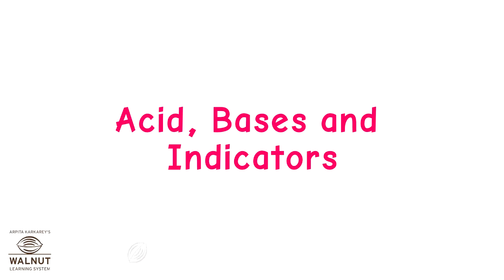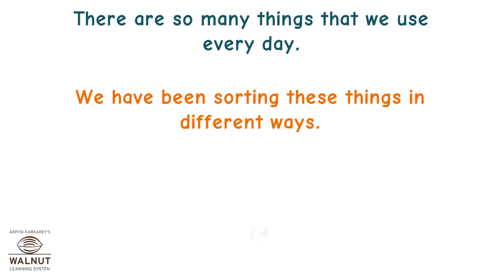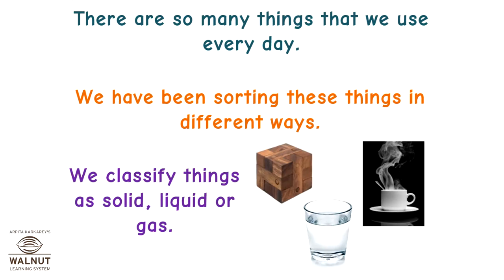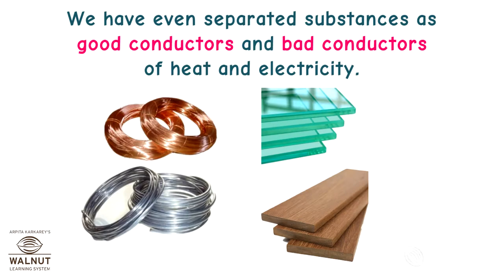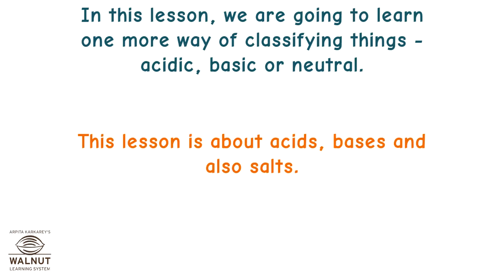Acids, Bases and Indicators. There are so many things that we use every day, and we have been sorting these things in different ways. We classify things as solid, liquid or gas, and we have even separated substances as good conductors and bad conductors of heat and electricity. In this lesson, we are going to learn one more way of classifying things: acidic, basic or neutral. This lesson is about acids, bases and also salts.